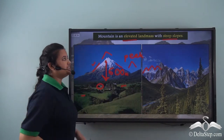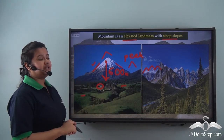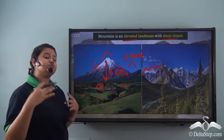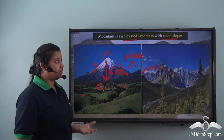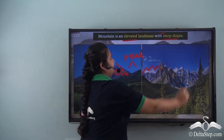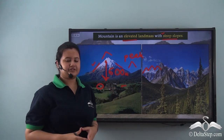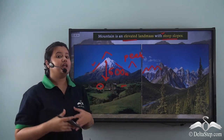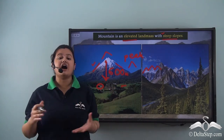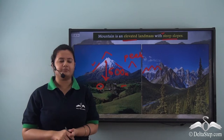So the characteristics of a mountain are: they are usually very tall, they have steep slopes, and they have a peak or a summit. Now let us see how these mountains are formed.